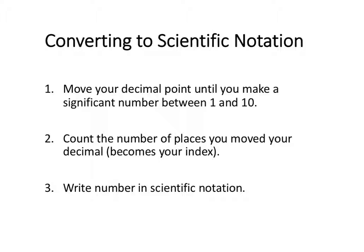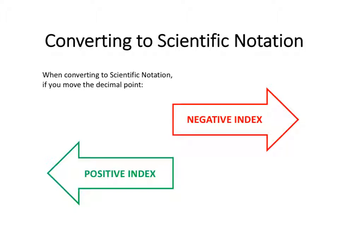To convert into scientific notation from an ordinary number, there are three steps. The first step is to move your decimal point until you make a significant number between 1 and 10. The second step is to count the number of places you moved your decimal — that count becomes your index in scientific notation form. The last step is to write the number in scientific notation. If we are moving our decimal place to the right, then our power is going to be negative. If we are moving our decimal place to the left, our power is going to be positive.